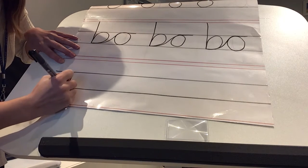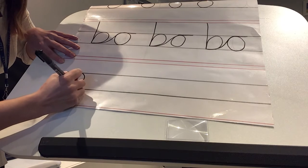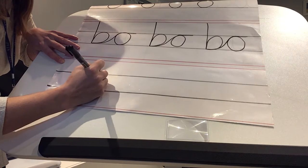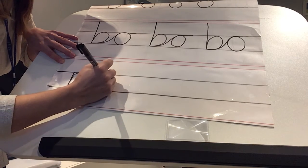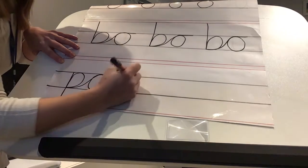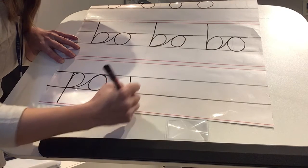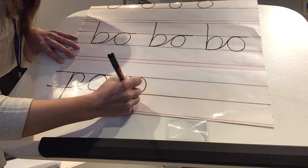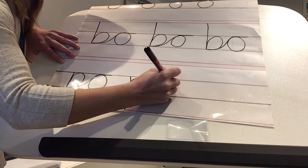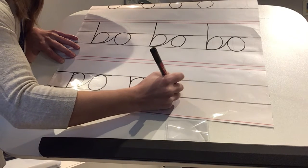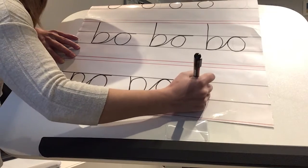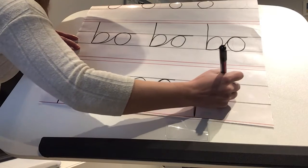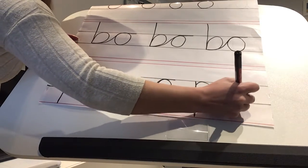So down, up and over and then just as we did before, stop, change direction and back round. Down, up and over and then start your O and change direction. Do one more. Up, lead out and change direction.